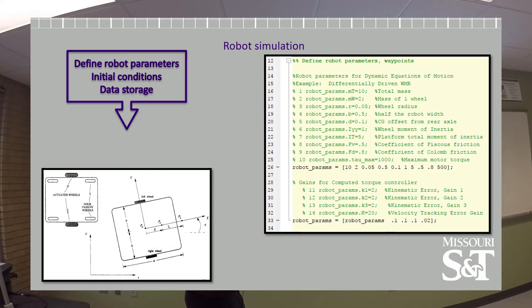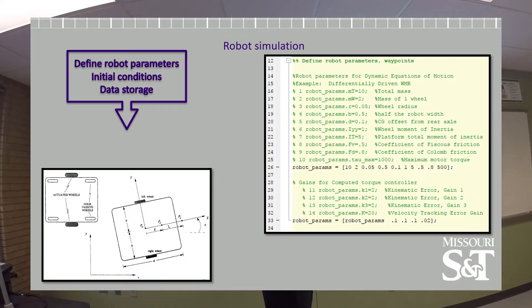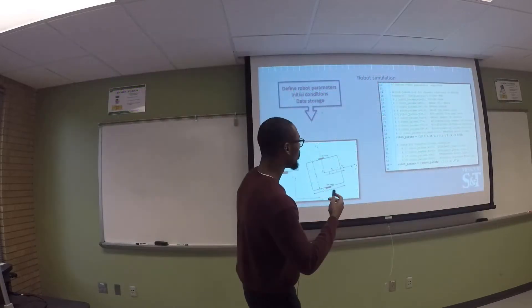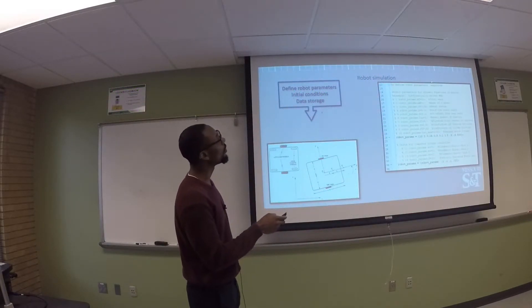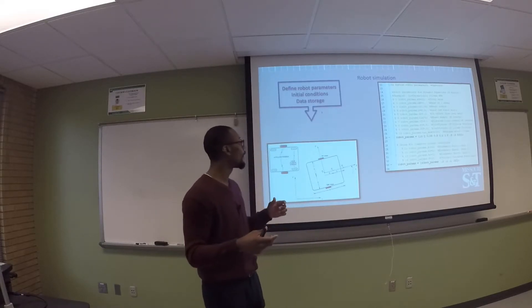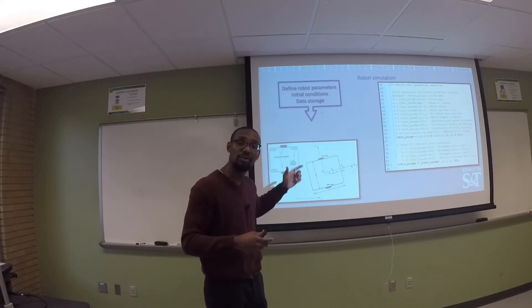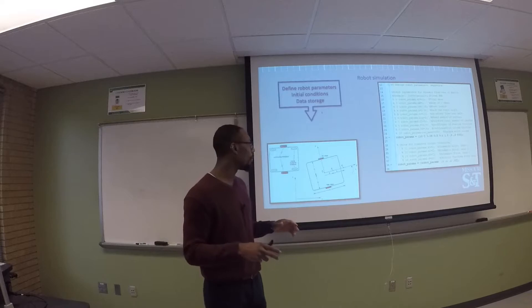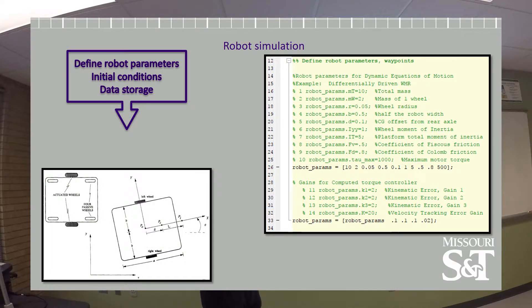The first step is to define robot parameters, initial conditions, and data storage. We define the mass of the robot, mass of the wheels, the moments of inertia, friction coefficients, and the maximum torque the wheels are allowed to apply. We also define the gains in the kinematic controller. All of these relationships relate to physical geometric quantities on the robot, which are shown in the figure to the right.